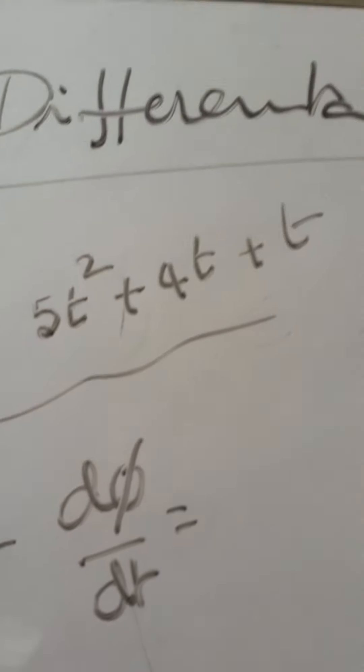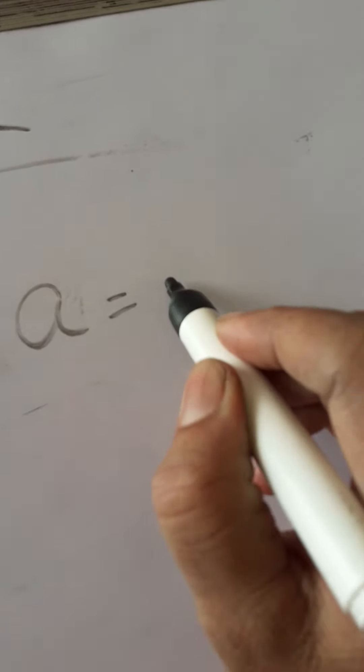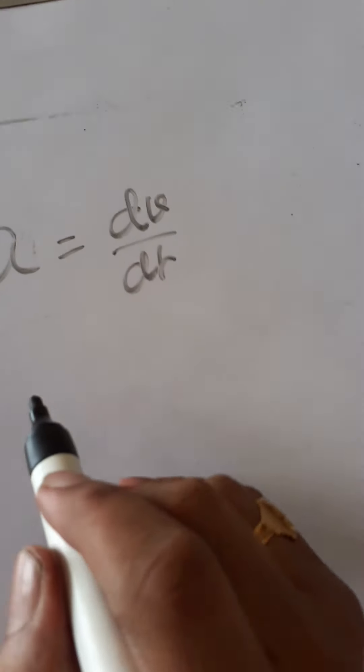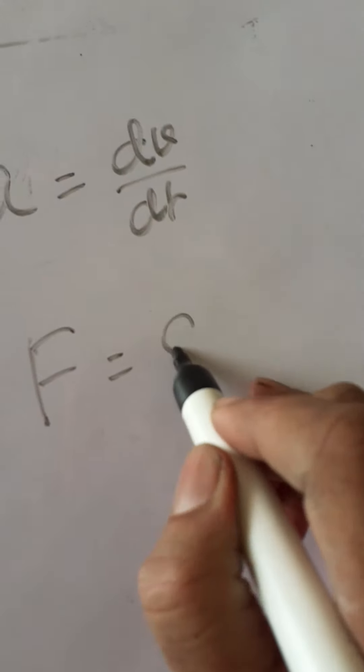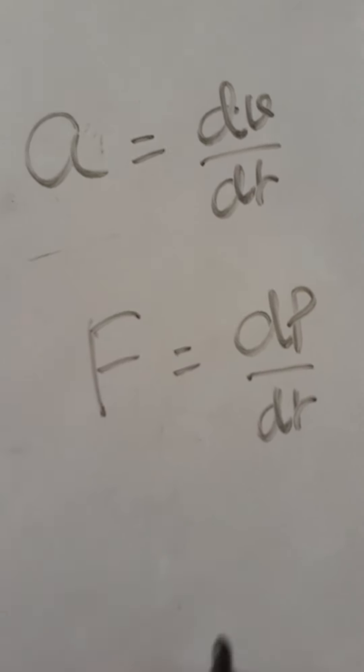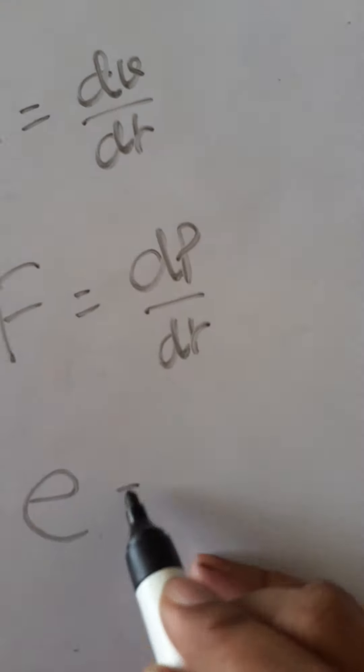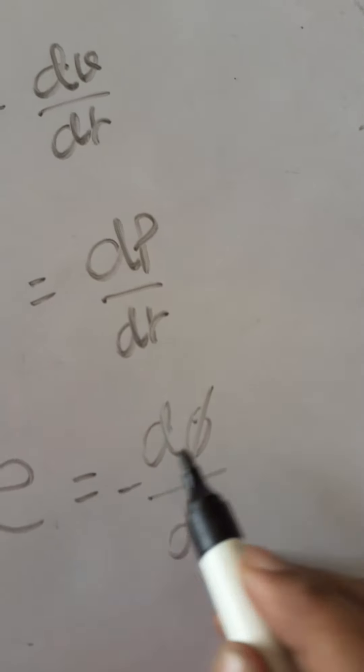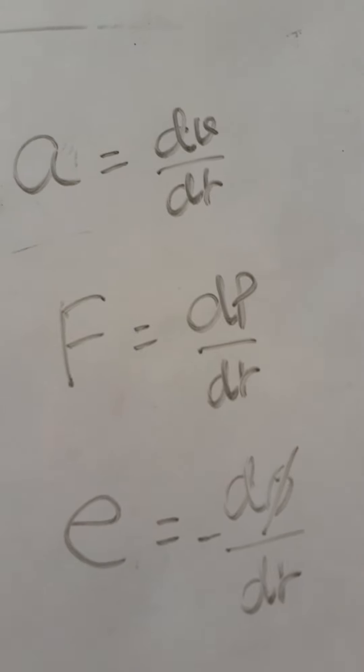And some more examples. Suppose if you want acceleration dv by dt. If you want force dp by dt. The rate of change of momentum is the force. And induced EMF is equal to d phi by dt, with negative sign minus d phi by dt. Like that many places we use differentiation.